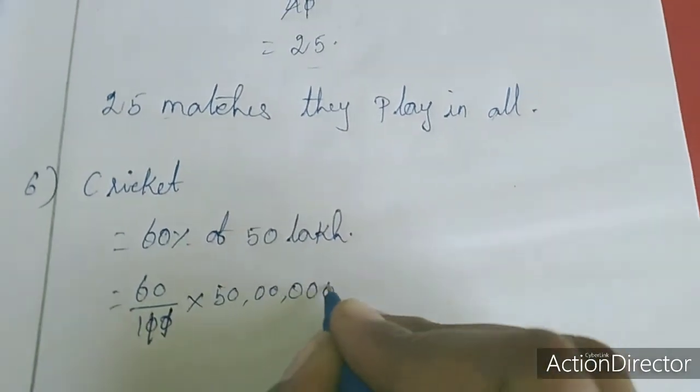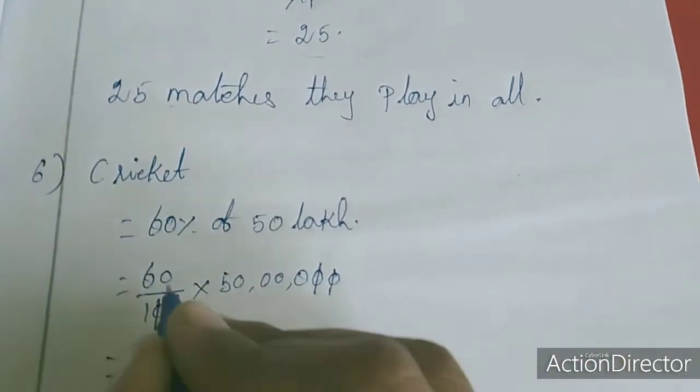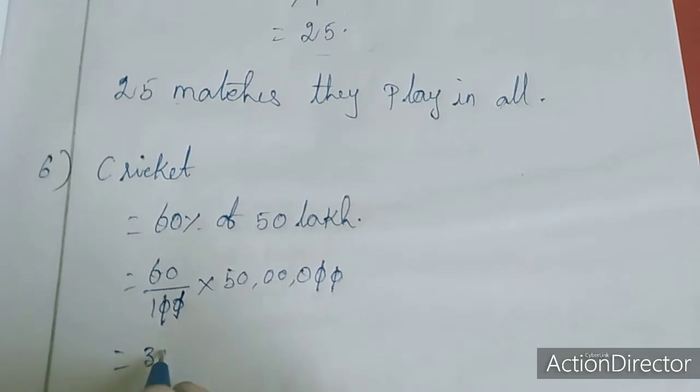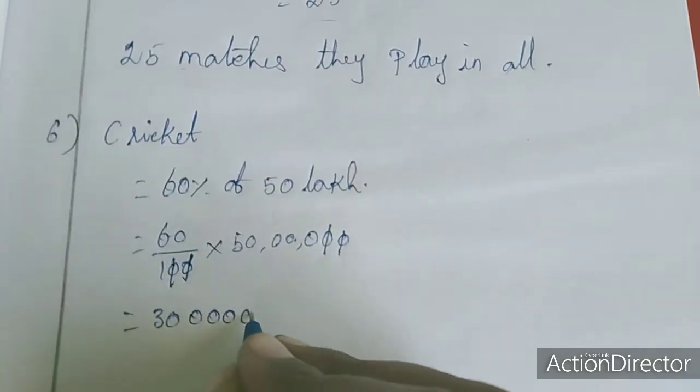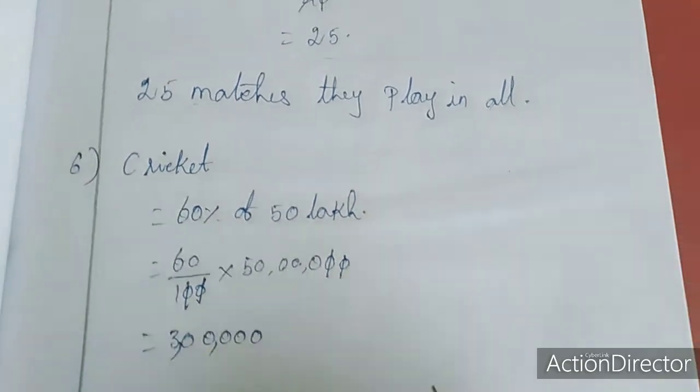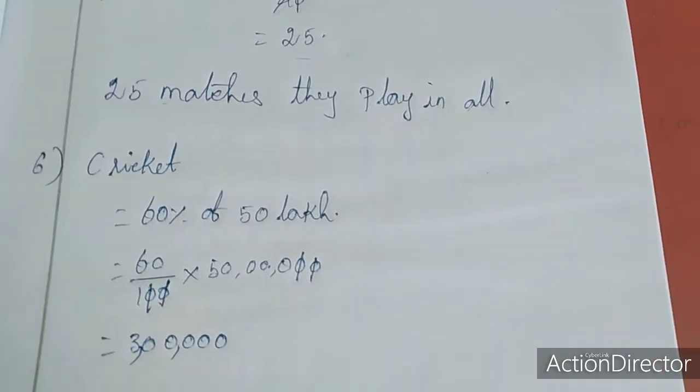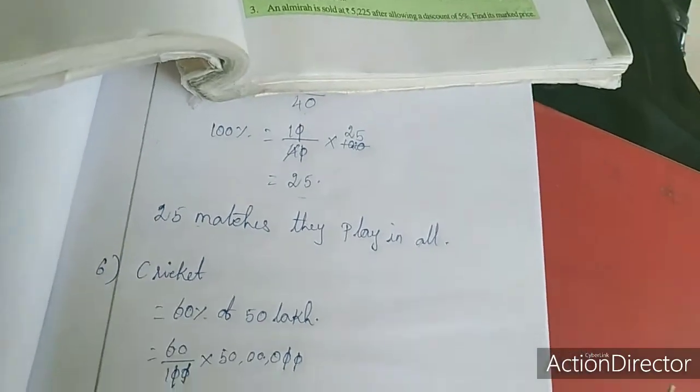1, 2, 1, 2, zeros. 6, 5, 30, 1, 2, 3, 4 zeros, 1, 2, 3, 4 zeros. Cricket: 30 lakh. And we will move to the next game.